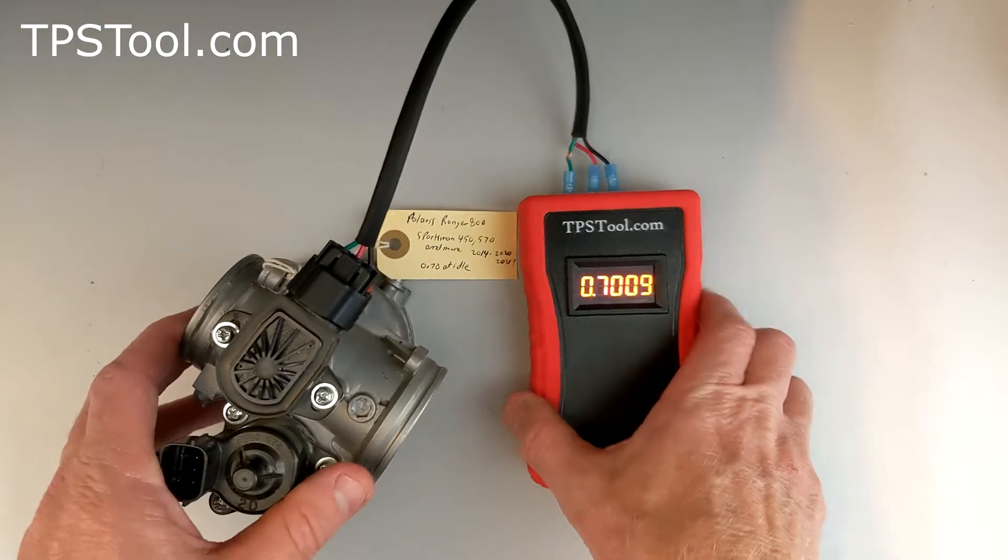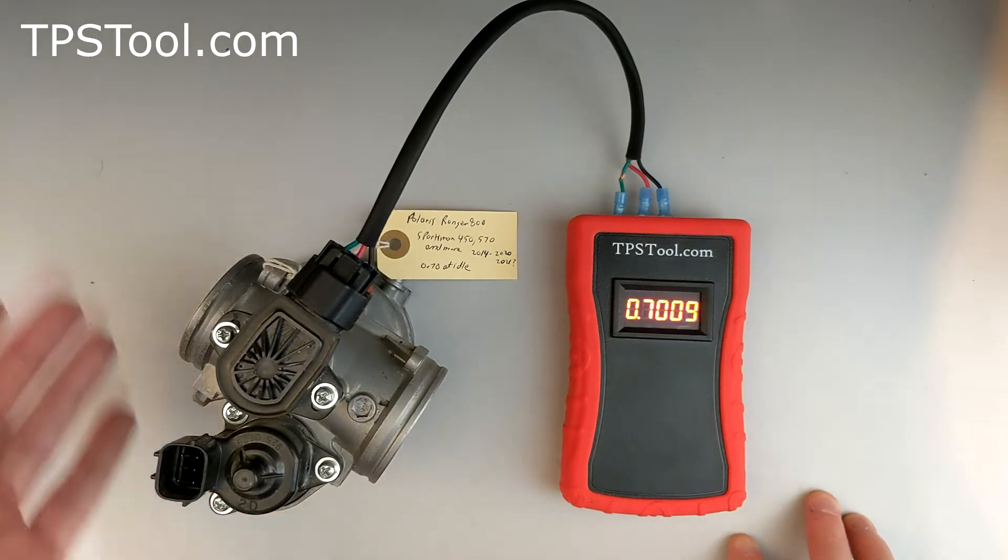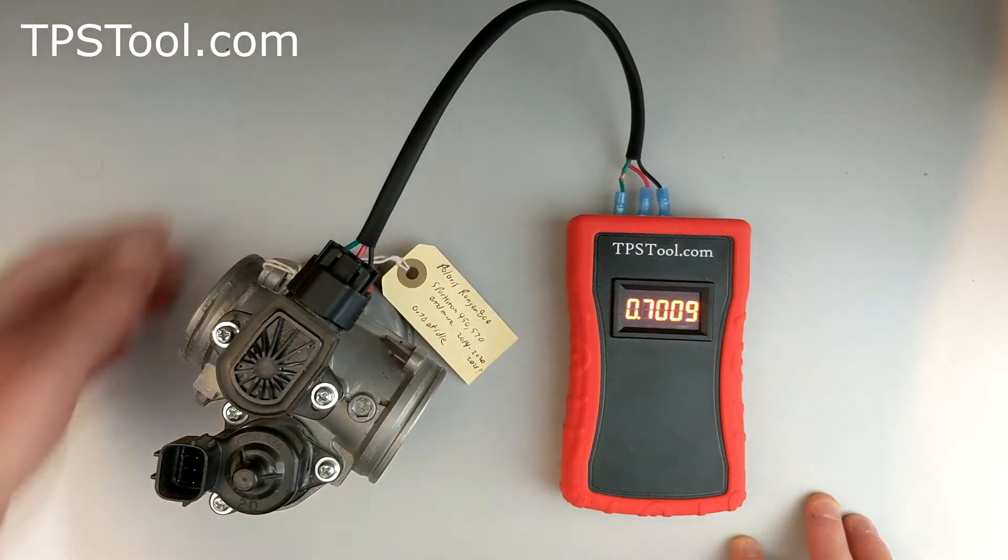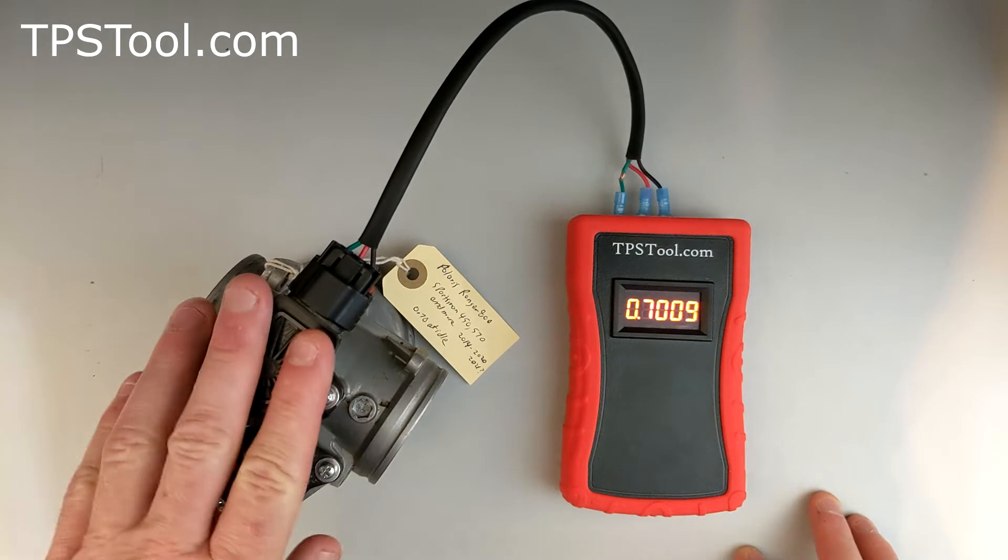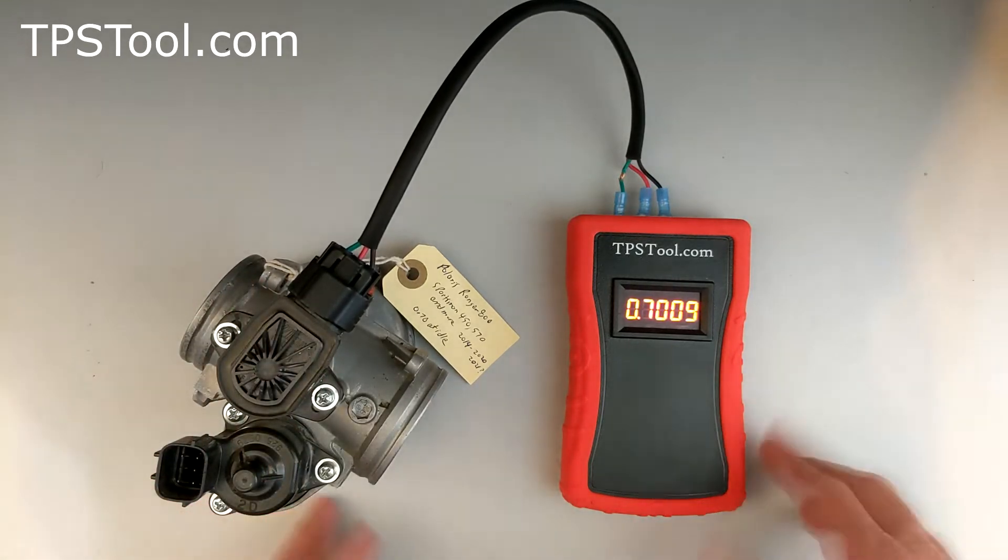Hey, this is Matt from TPSTool.com. I'm here to answer a question I get quite often lately, which is I've got a Polaris Ranger or Sportsman, and some places I'm seeing the TPS should be set to 0.7 volts, and some places I'm seeing it should be set to 0.46. Which is right? Well, I'm going to show you.